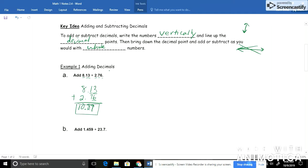Just to double check, let's just see if we were to estimate these, what would we get? Well 8.13 would be close to 8 plus 2.76, we'd round this up to 3. 8 plus 3 would give me 11. Am I close? Absolutely. So that is a reasonable answer.